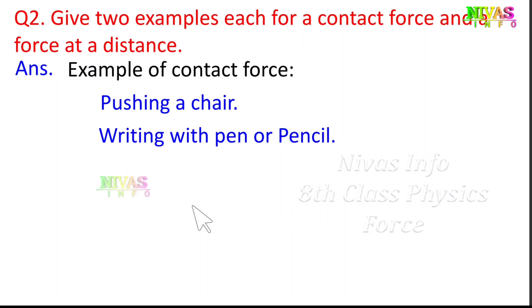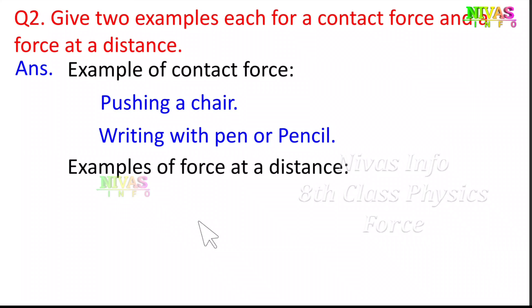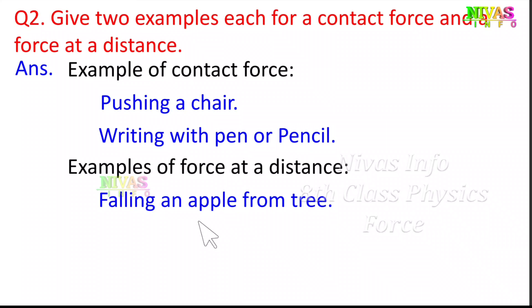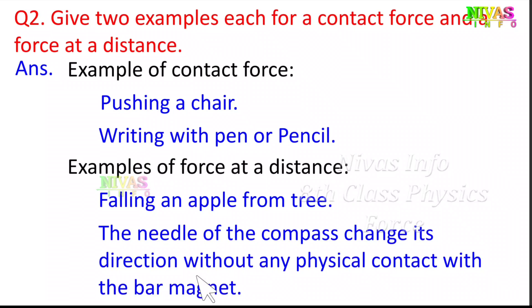The examples of force at a distance: a simple and basic example is falling of an apple from a tree. Another example is that the needle of the compass changes direction without any physical contact with the bar magnet. A bar magnet changes the direction of the compass needle. These are both examples of force at a distance.